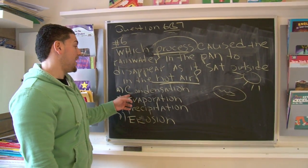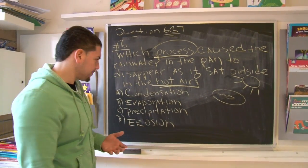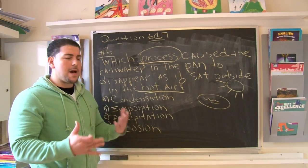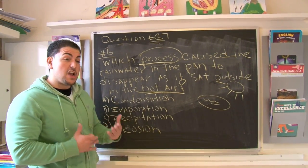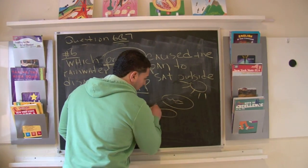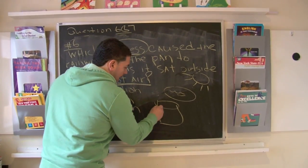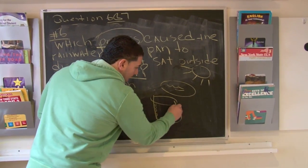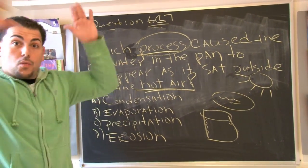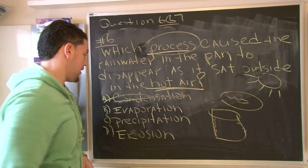The first choice is condensation. When they're talking about condensation, they're talking about water changing its chemical state — not water evaporating. You have condensation when, say, you have a plastic jar and it's really hot outside and there's a lid and you see all these little beads of water on the side. But in the question it says the water disappeared, so condensation is out.